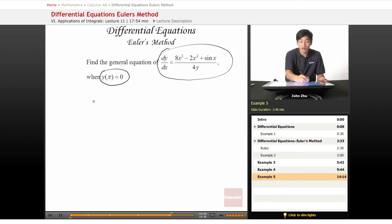So all we have to do is separate the variables first. So we get 4y dy equals 8x cubed minus 2x squared plus sine of x dx. And if we integrate both sides,